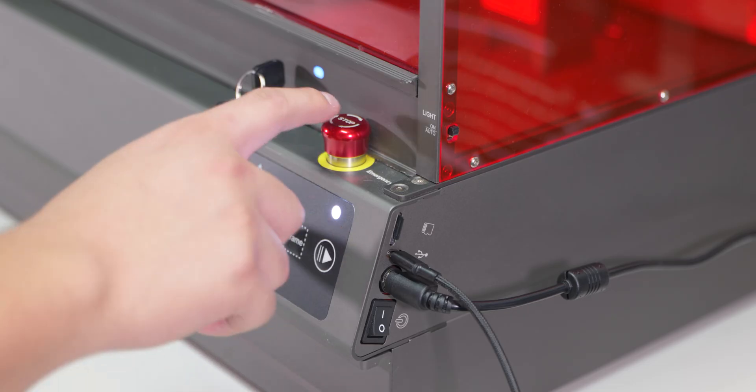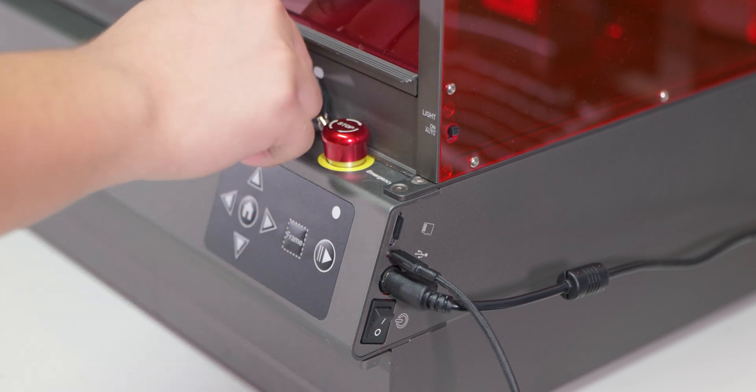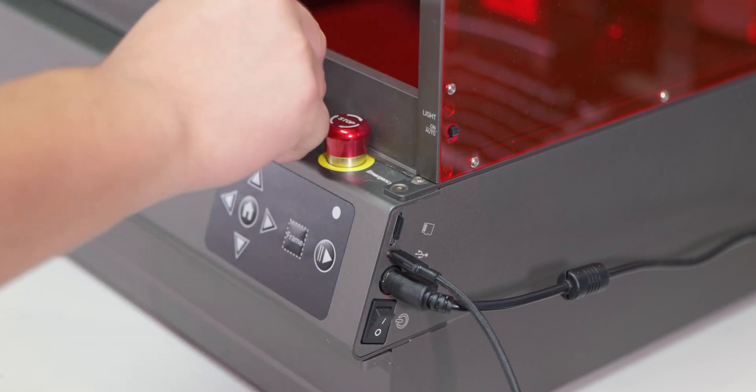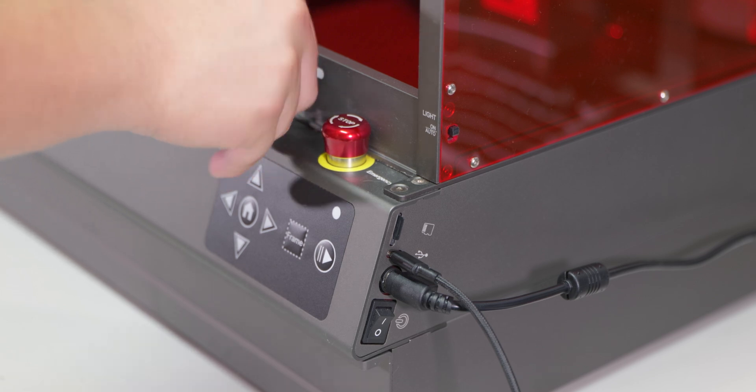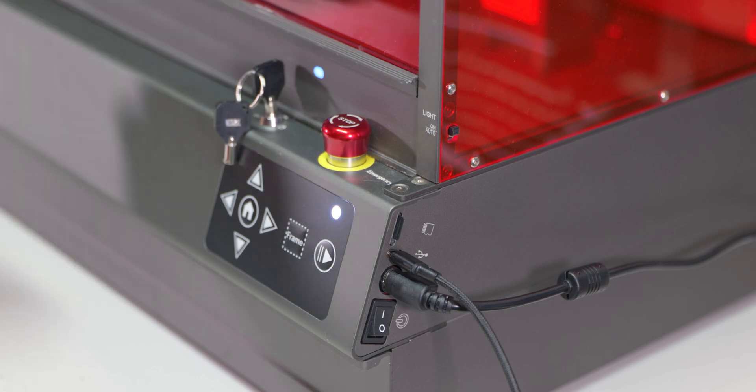To turn on the unit, there are three things you need to do: the unit requires a key insert to turn on, followed by the power switch on the side. There's an emergency stop button for safety, so you twist that and the unit is now up and running, ready to get started with the software.